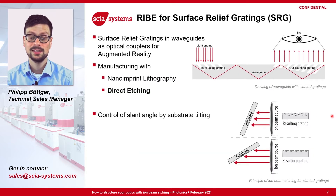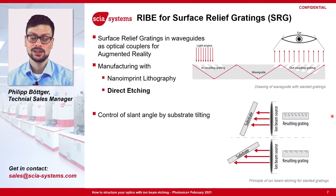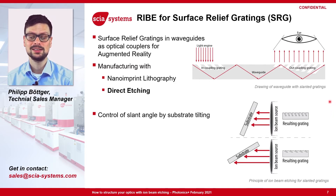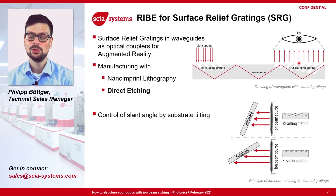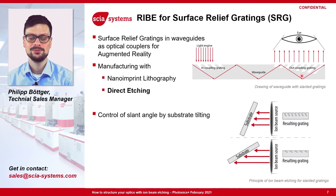A second application of ion beam etching is the production of surface relief gratings. Such gratings are used as in-couplers or out-couplers in optical waveguides for augmented reality devices.